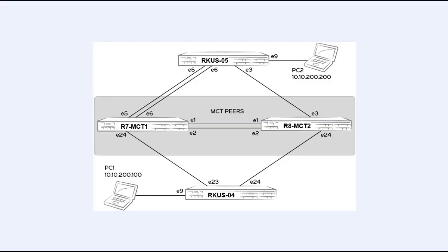Here is the topology I'll be using in this demonstration. It consists of two ICX7240 switches running layer 2 or switch code acting as MCT clients, and two ICX7750 switches running layer 3 or router code acting as MCT peers. These are the devices doing the heavy lifting for MCT. The Ruckus L4 switch will have a two-port lag configured with one link connecting to each MCT peer node. The Ruckus L5 switch will have a three-port lag configured with two links connecting to MCT1 peer and one link connecting to the MCT2 peer.